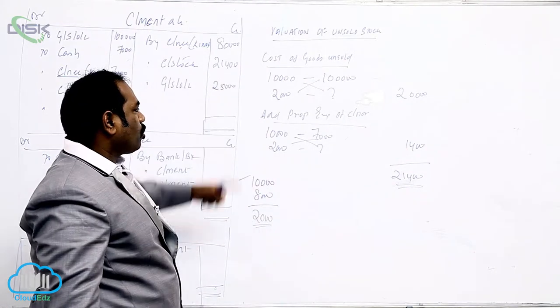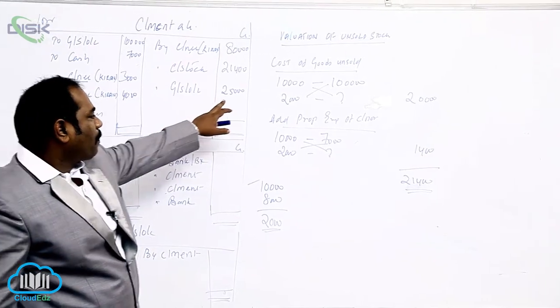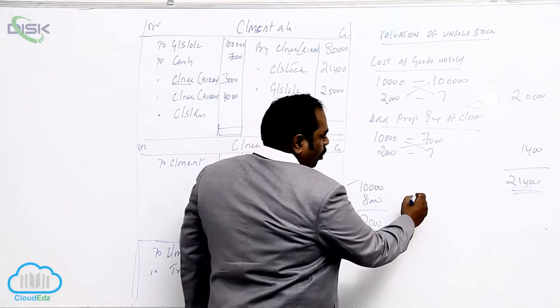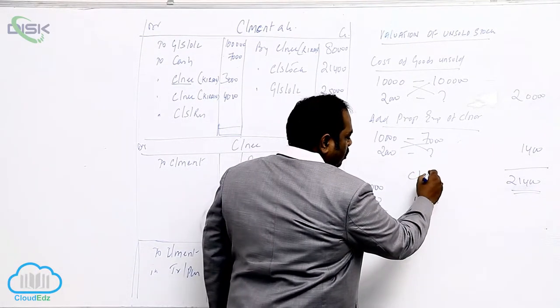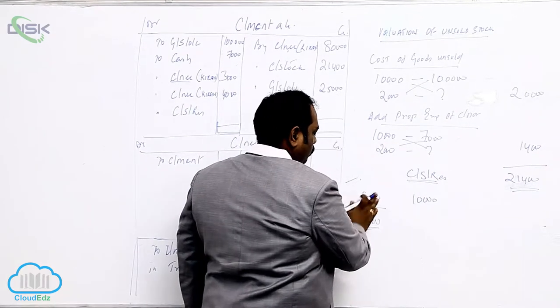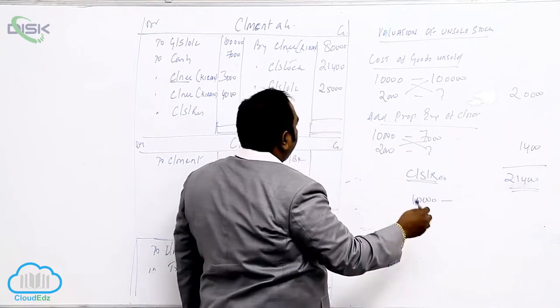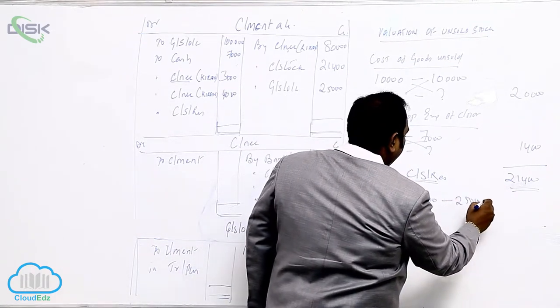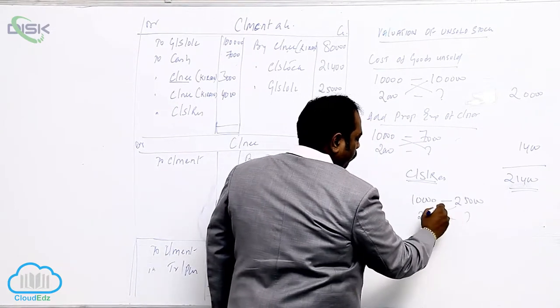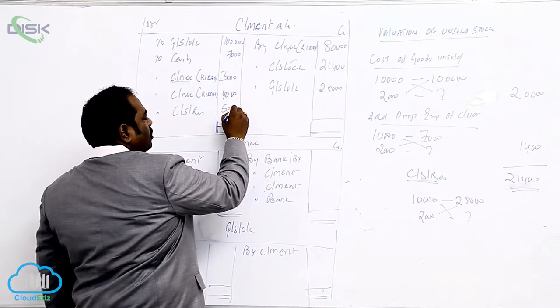Now whenever there is consignment stock, you need to call it what? Consignment stock reserve. What is the extra price you have added here? 25,000. For 10,000 cases, calculation of consignment stock reserve. For 10,000 cases, what is the extra price you have added? 25,000. For 2,000 cases, how much? Cross multiply, you got 5,000 as consignment stock reserve.